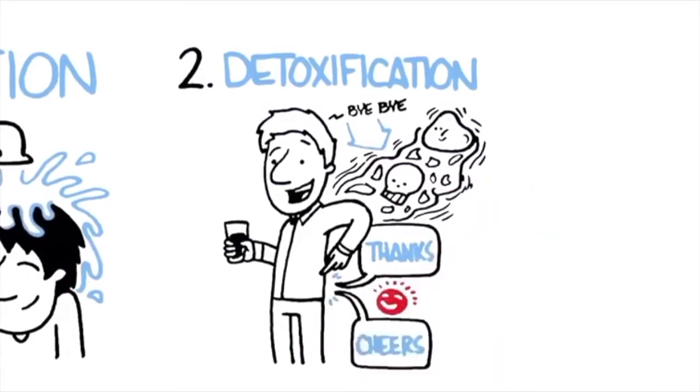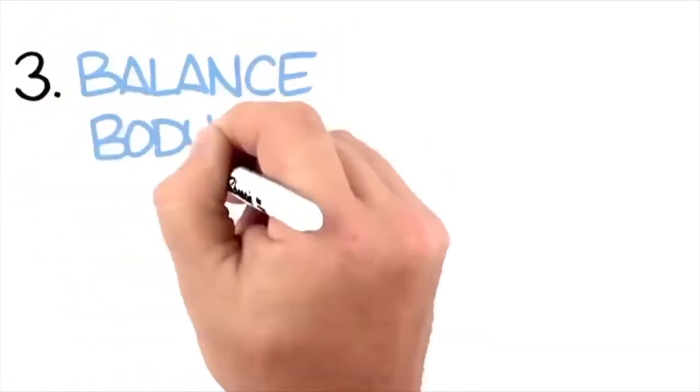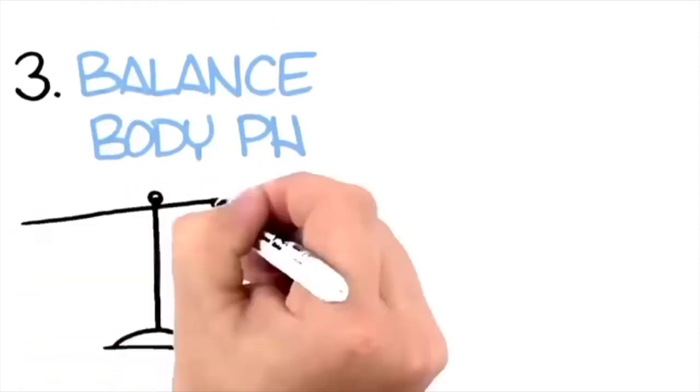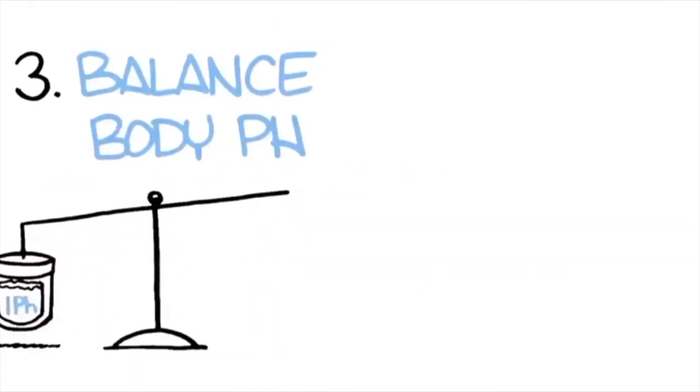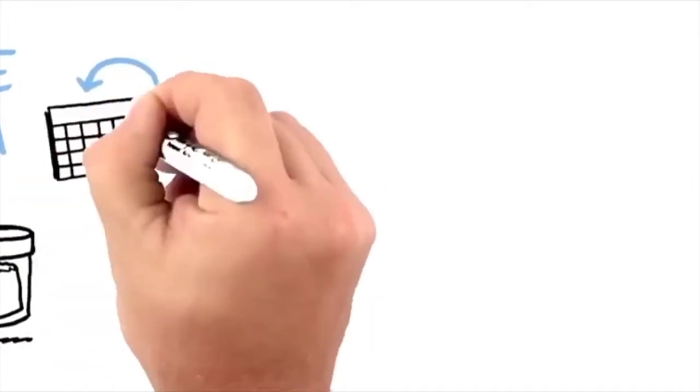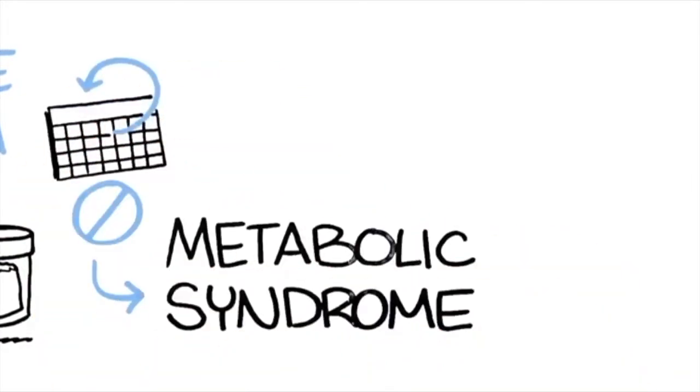Three: balanced body pH. Research shows that raising the pH of your urine by just one pH can prevent or eliminate the symptoms of metabolic syndrome, such as obesity, high blood pressure, high cholesterol, high blood sugar, and